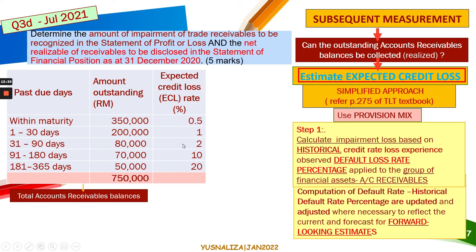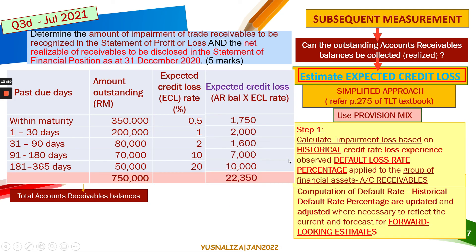The computation of the default rate is based on percentages that are updated and adjusted to reflect current and forward-looking estimates — such as the impact of COVID-19 or natural disasters. To calculate the expected credit loss, multiply the ECL rate by the amount outstanding for each past-due category: within maturity, 1–30 days, up to 181–365 days, each multiplied by the respective expected credit loss percentage.